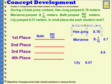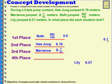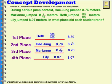Hae Jung would be in 2nd place, because this one is 8 and 76 hundredths. So this is 8 and 8 tenths or 80 hundredths, 76 hundredths, 8 and 76 hundredths, 8 and 7 tenths or 70 hundredths. If we write each of these as a decimal in the hundredths place, 80 hundredths is greater than 76 hundredths, which is greater than 70 hundredths, which is greater than 7 hundredths.